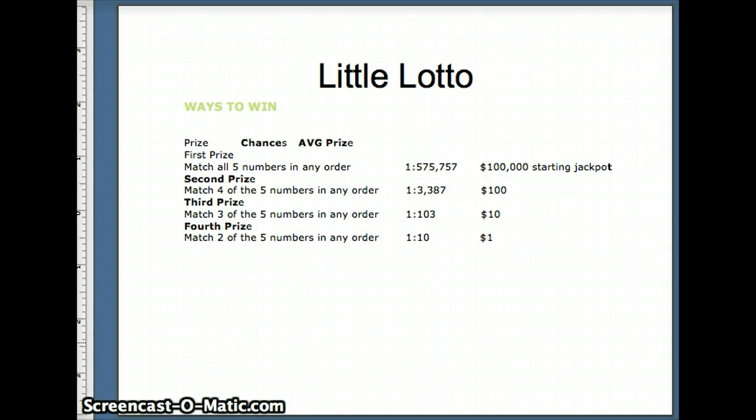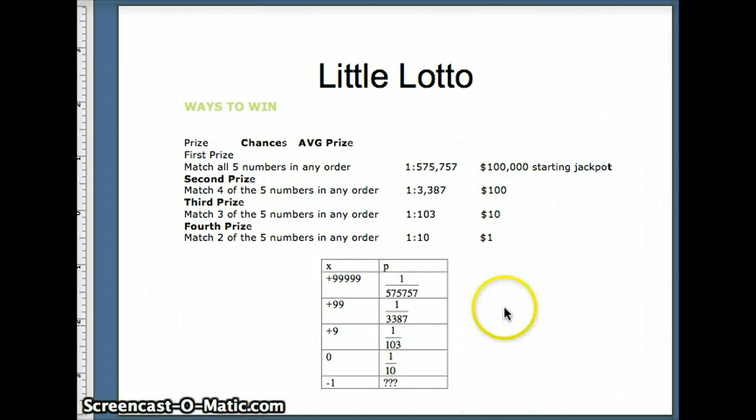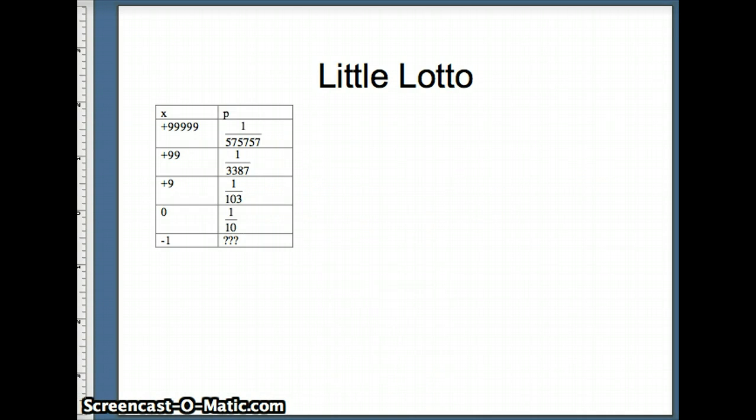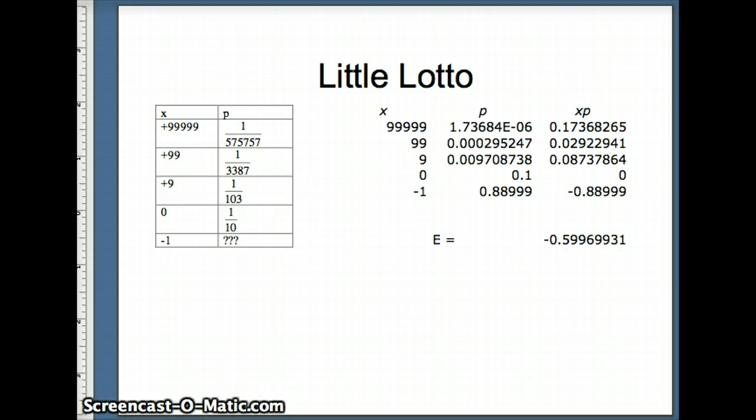Using that, we can come up with our random variable. If you win $10,000, you really win $9,999, because you win $10,000 minus the one that you originally invested. If you win $100, you really win $99. The question is, what are the probability of losing your dollar? You'd have to add up these four numbers and then subtract their sum from 1. That will give you your probability of losing.